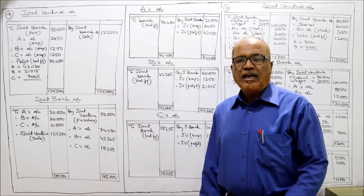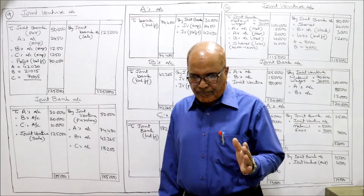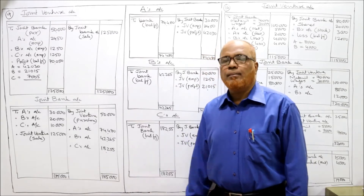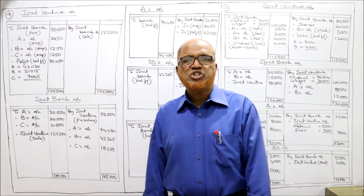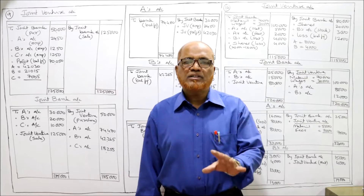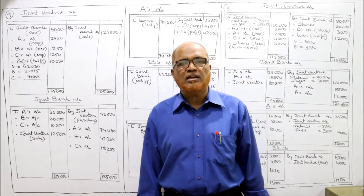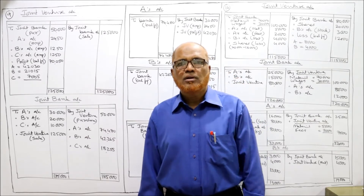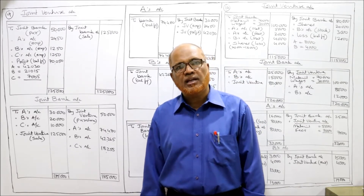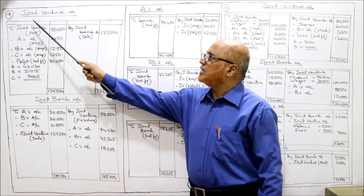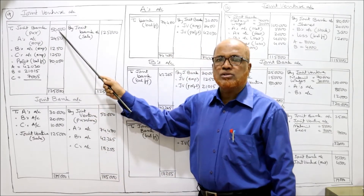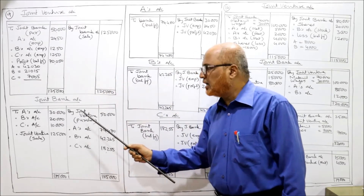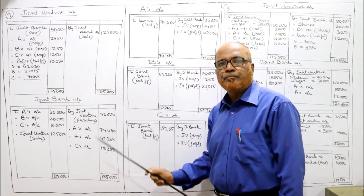Now, after this contribution they have purchased machines for Rs. 50,000 in auction. The entry will be joint venture account debit to joint bank account - how much? 50,000. So joint venture account debit side to joint bank account, purchase 50,000. Joint venture is debited, joint bank account is credited by joint venture purchase Rs. 50,000. Rs. 50,000 worth of machines were purchased and payment made from joint bank.